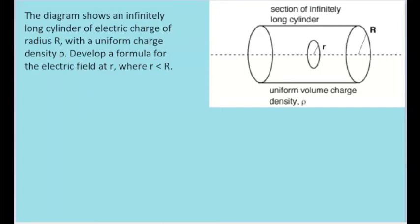In this problem, we have a uniform charge distribution shaped like a cylinder with radius big R, with a uniform charge density marked by this rho variable. Our goal is to derive a formula that can be used to find the electric field at any point, at any radius, within this cylinder of charge.